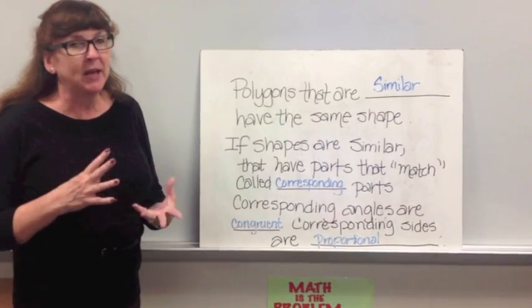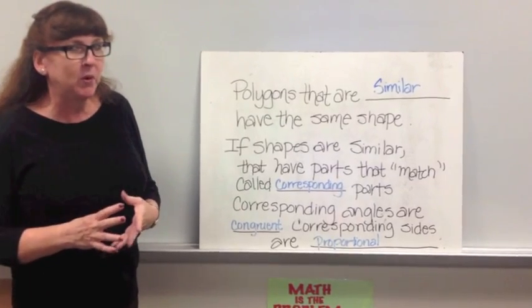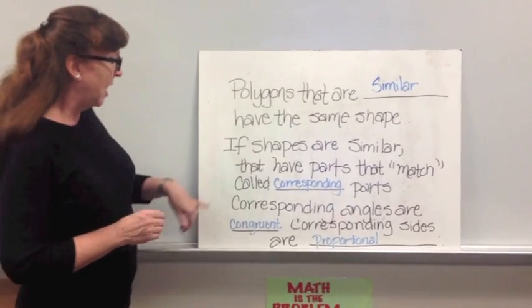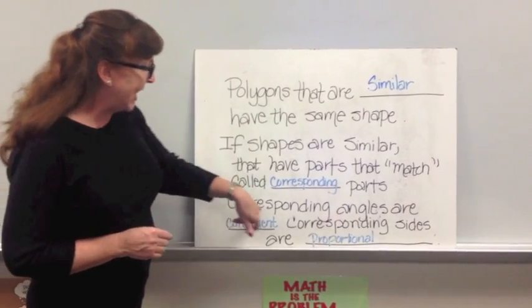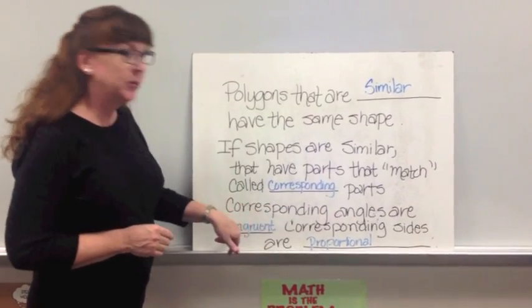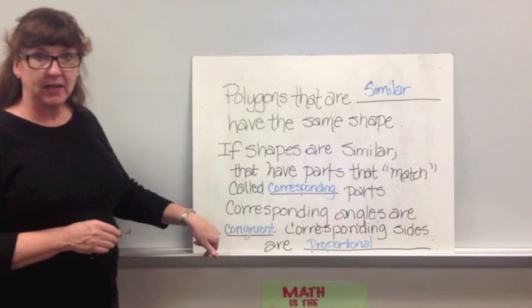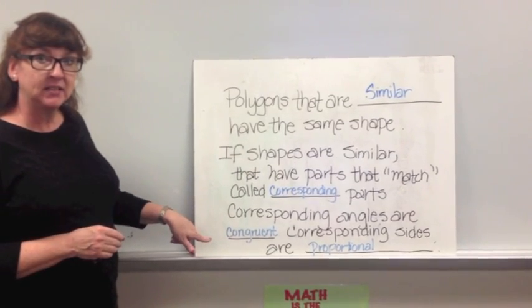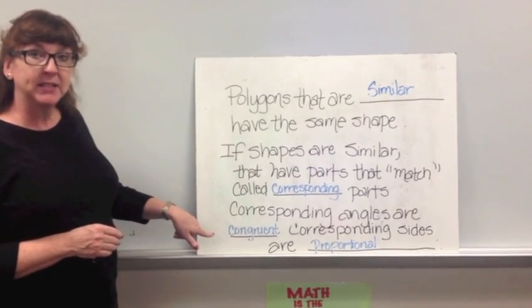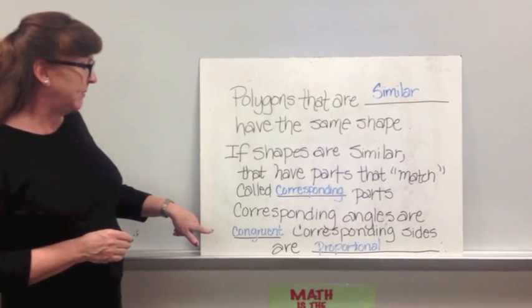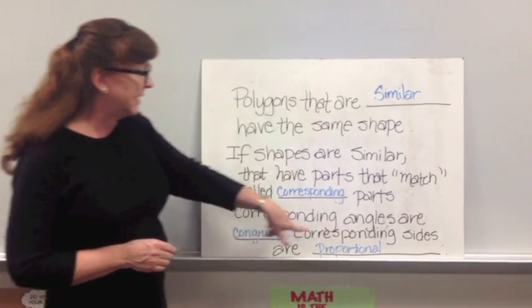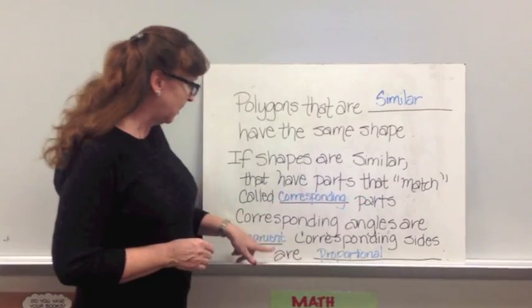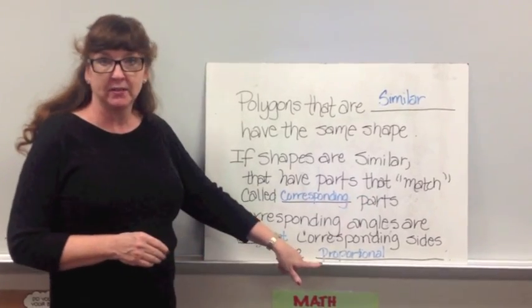Corresponding parts is a very important word today. Corresponding angles are congruent — and if you remember, congruent means same size, same shape — and corresponding sides are proportional.